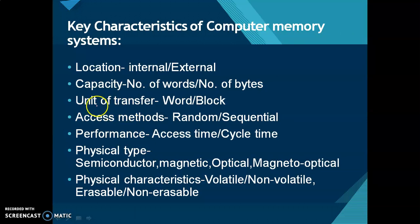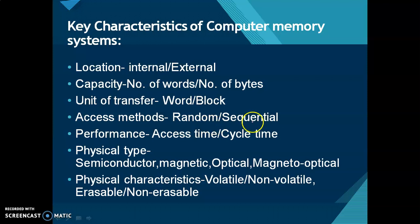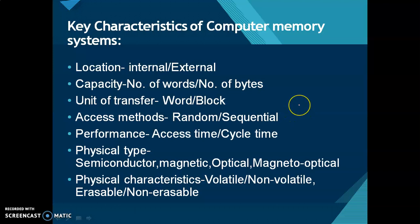The next characteristic is unit of transfer. Transfer can be of words or a block of words. The next characteristic is access method. Memory can be accessed randomly or sequentially. In random access, each storage location can be accessed independently of other locations. In sequential or serial access, every storage location is accessed in a particular order depending on other locations.